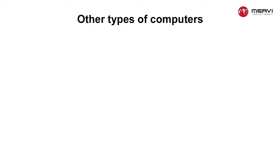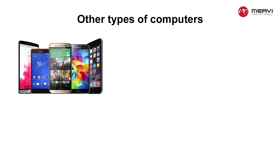Other types of computers. Many of today's electronics are basically specialized computers, though we don't always think of them that way. Here are a few common examples. Smartphones: many cell phones can do a lot of things computers can do, including browsing the internet and playing games. They are often called smartphones.